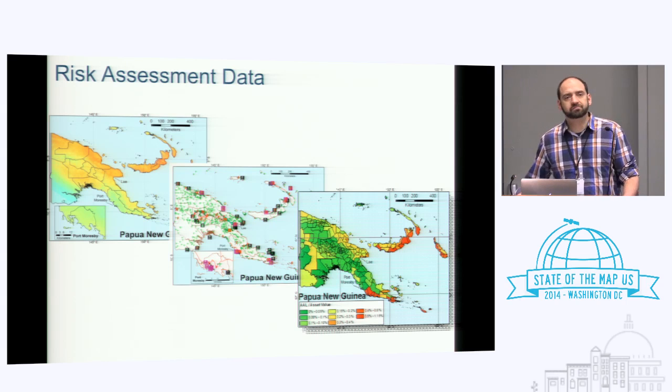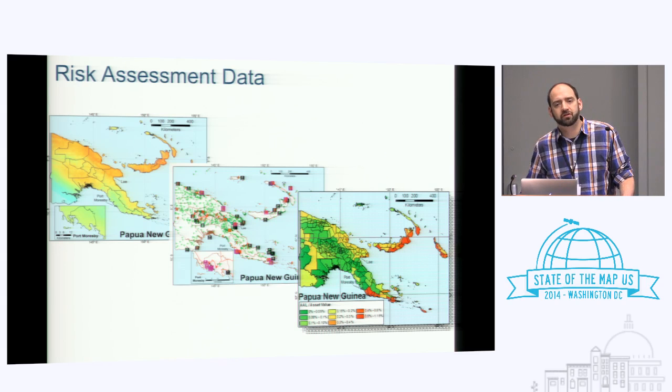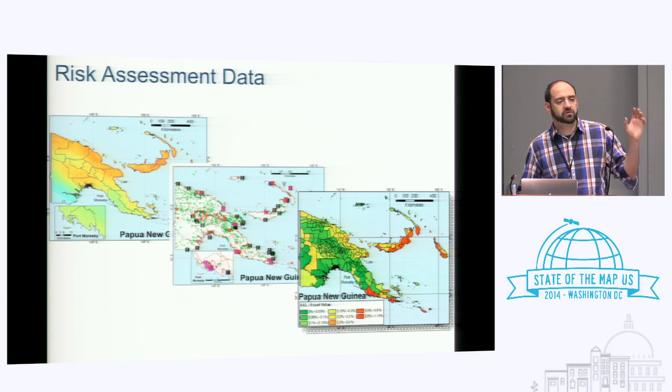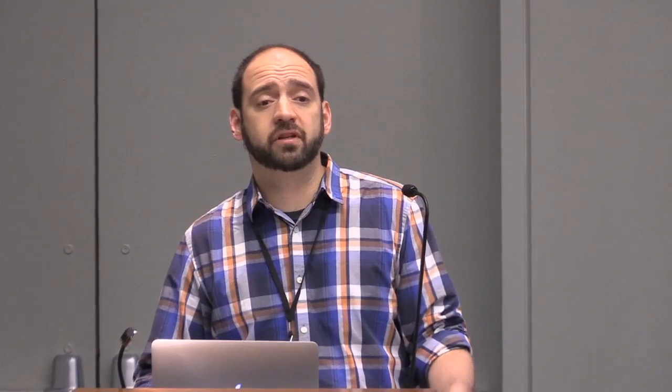We know that disaster risk is the result of a complex and dynamic relationship between natural phenomena such as earthquakes or storms and socially produced vulnerability to those phenomena. How we build our buildings, where we put our cities, how we organize our economies and set up our governments — all have complex relationships with the nature of risk.